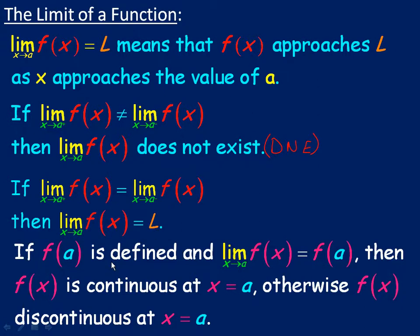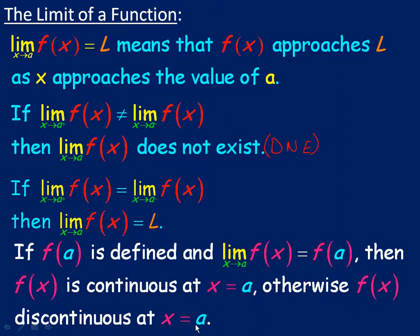A little bit about continuity — where a graph is continuous or discontinuous. If a function is defined at a certain value a, and the limit of the function as x approaches a is the same value as that function value f(a), then the function is said to be continuous where x equals a. Otherwise, if that limit existed but wasn't the same as f(a), then the graph would be said to be discontinuous at a. We will take a look at examples of that — there's one in this lesson and some more in a later lesson.